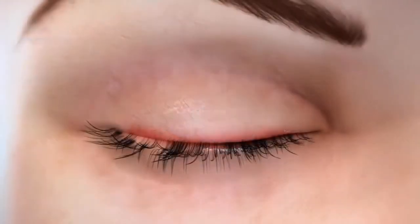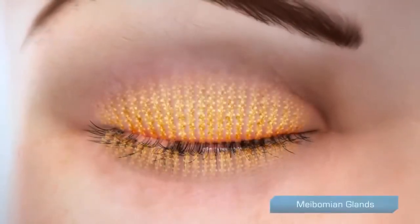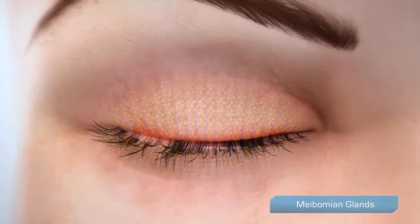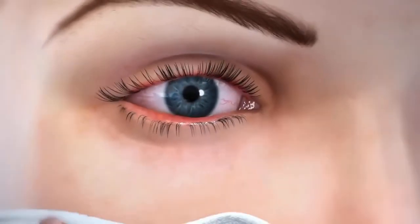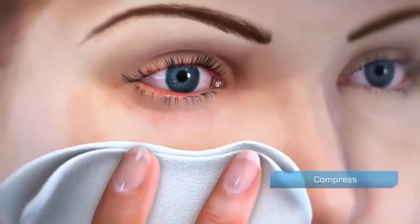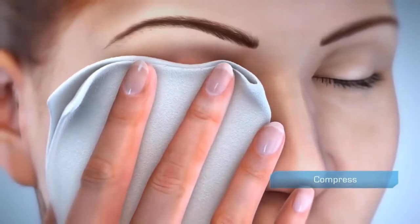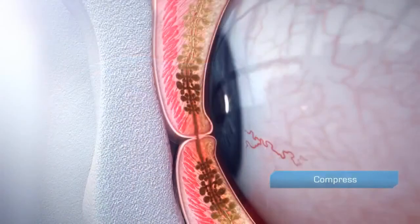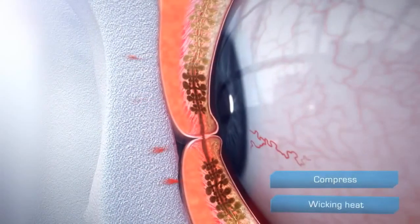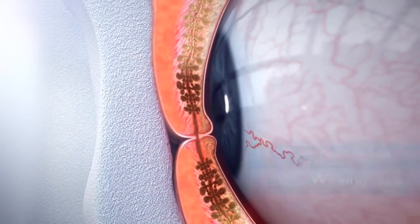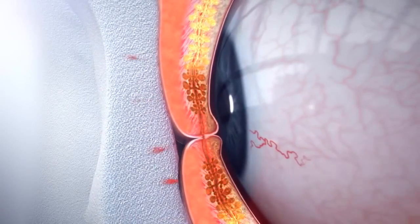One of the most common treatments for meibomian gland dysfunction and associated dry eye is at-home warm compress therapy. This approach has limited clinical effectiveness, as heat is wicked away by blood vessels in the eyelids, limiting the amount of heat reaching the meibomian glands.